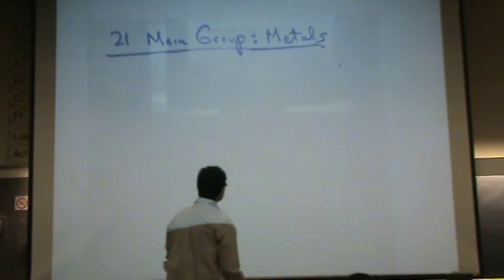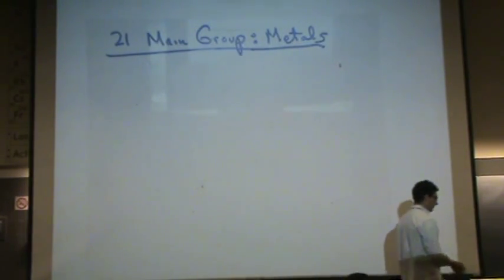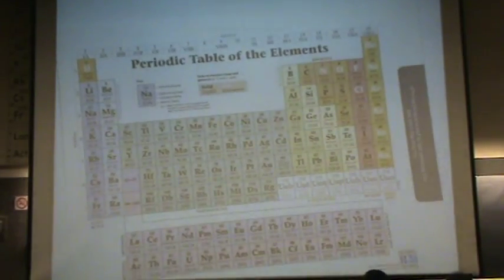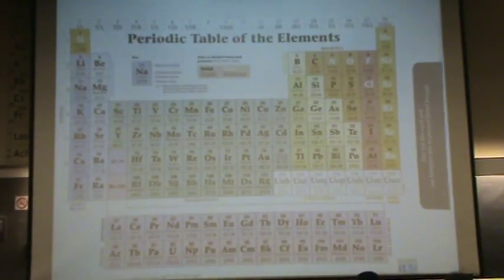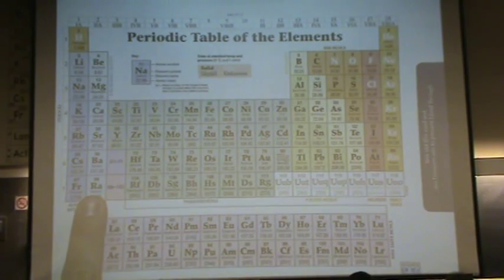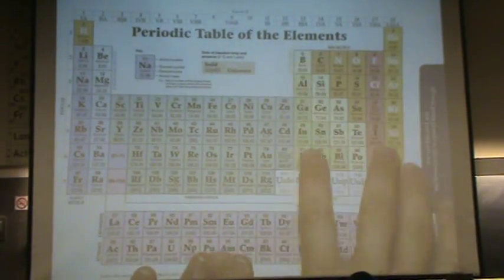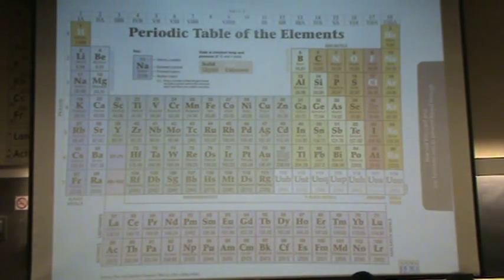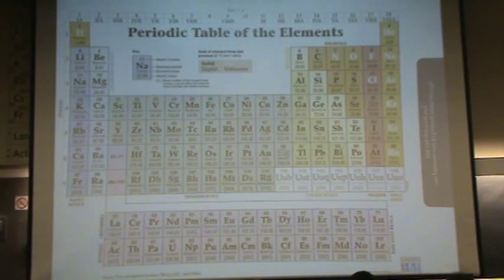These are really short sections, these main groups, so we'll finish it pretty quickly. The main group are the S and the P block. So these two columns, the alkaline and the alkaline earth, along with this whole P block from boron to the noble gases.